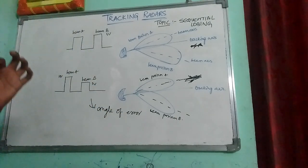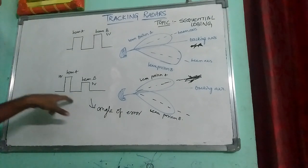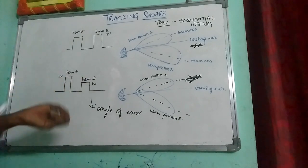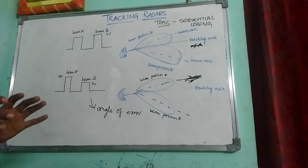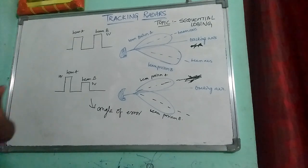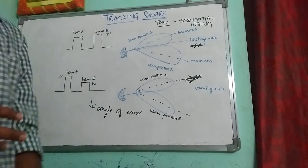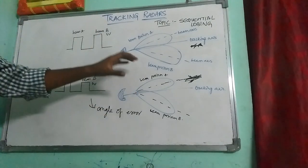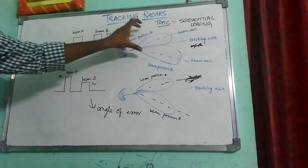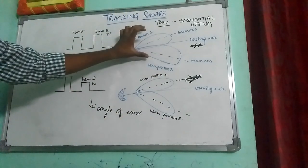The difference in voltage gives the angle of error and also the change in velocity, meaning I can measure the angular displacement of the target. This is about the sequential lobing technique — we generate two beam positions and sequentially scan them using the antenna beams.